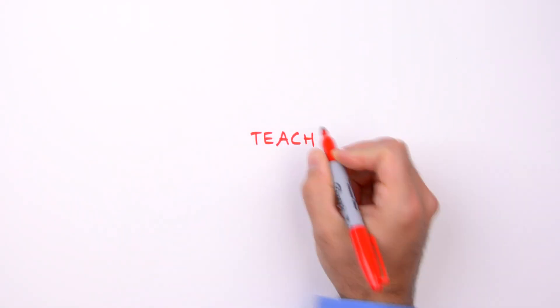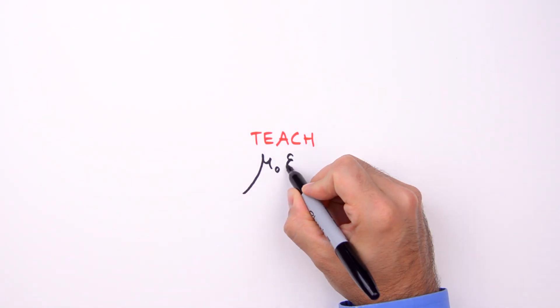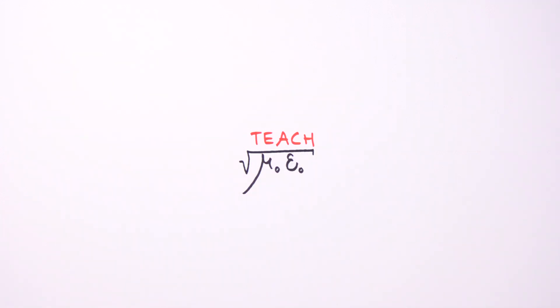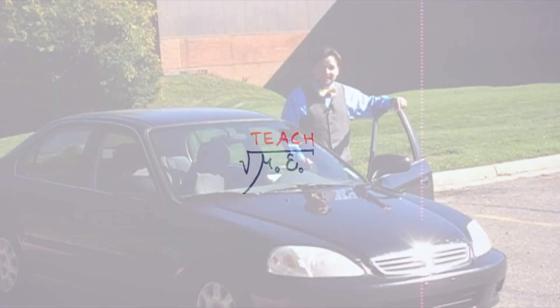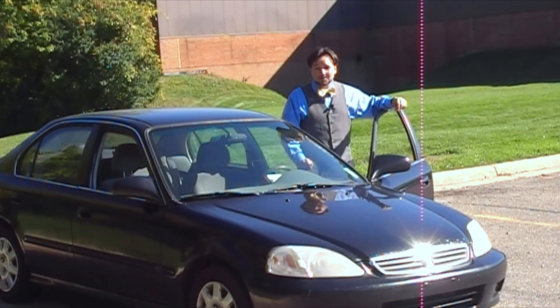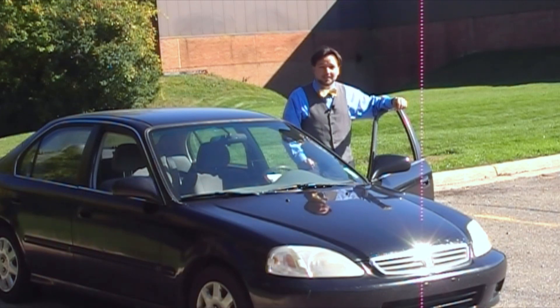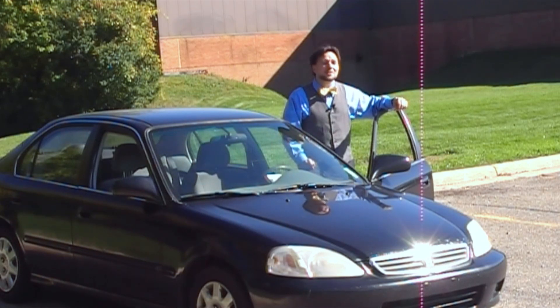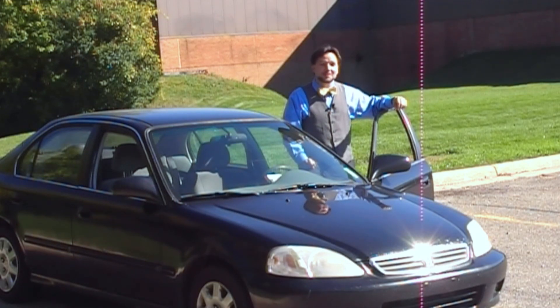Hello everyone, I'm Jesse Mason, and for today's episode of Teach Me, we're on the campus of Oakland Community College in Farmington Hills, Michigan. We're here to gather data to determine a car's initial speed before its wheels lock up, bringing the car to a skidding halt. We'll measure the length of the skid marks and determine an experimental value for the coefficient of kinetic friction between tires and road, then use Newton's laws and kinematic equations to determine the car's initial speed. Lastly, we'll compare our results to a value obtained during the skid using a radar gun.